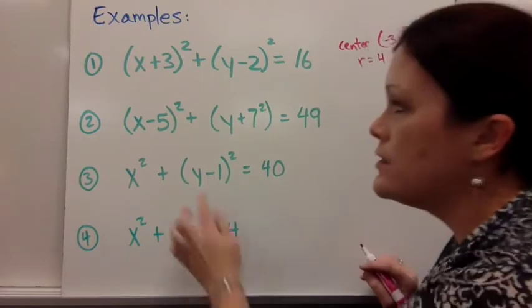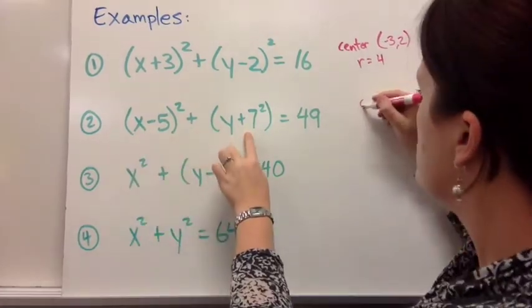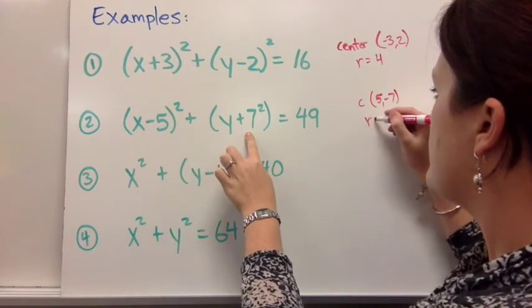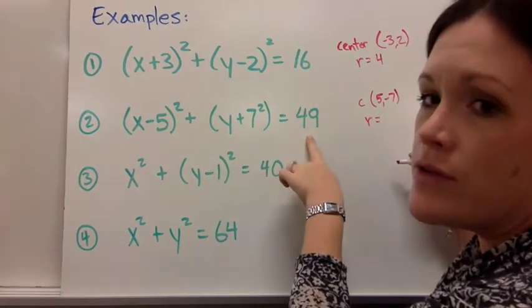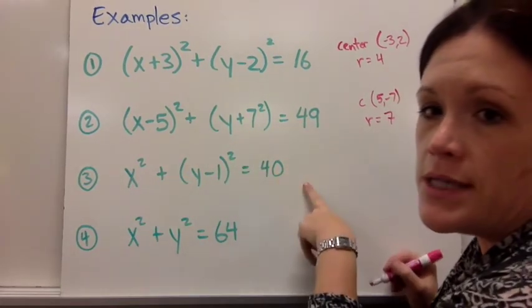For number two, I need to do the same thing. Change the sign when you pick out your center point. So the center point is (5, -7) and your radius again is the square root of this number. It doesn't always have to be even as you see in the next example.